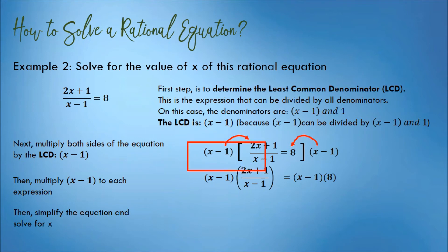x minus 1, times 2x plus 1, all over x minus 1, is 2x plus 1. x minus 1, times 8, is 8x minus 8.